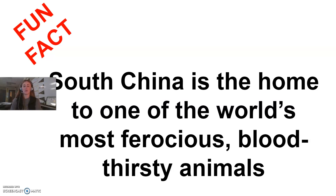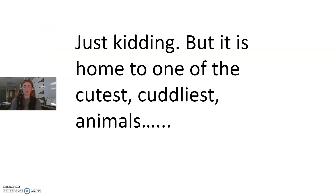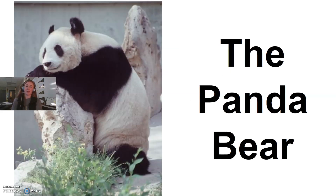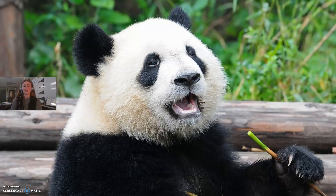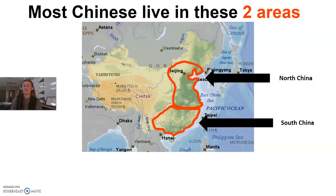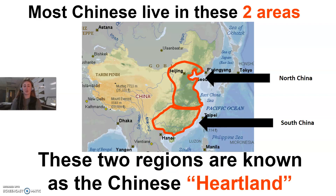South China is home to one of the world's most ferocious, bloodthirsty, dangerous animals — just kidding. It's actually home to one of the cutest, cuddliest animals: the panda bear. That is where panda bears reside — in South China. Most Chinese people live in the two areas we just talked about, North China and South China. Those two regions together make up what is known as the Chinese heartland, which is where the majority of the Chinese population lives.